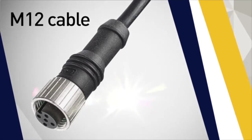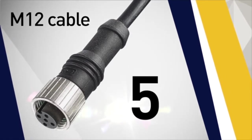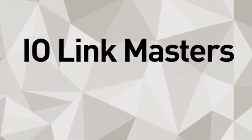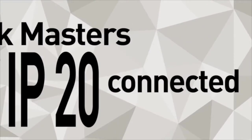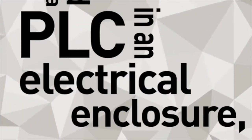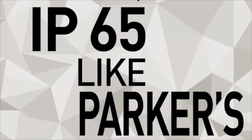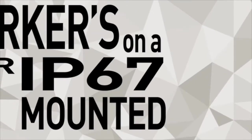IO-Link uses standard non-shielded M12 cables with three, four or five wires. IO-Link masters can be IP20 connected to a PLC and mounted in an electrical enclosure, IP65 like Parker's, or IP67 mounted on a machine.